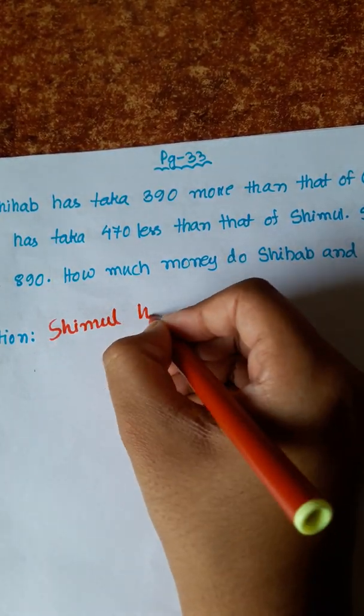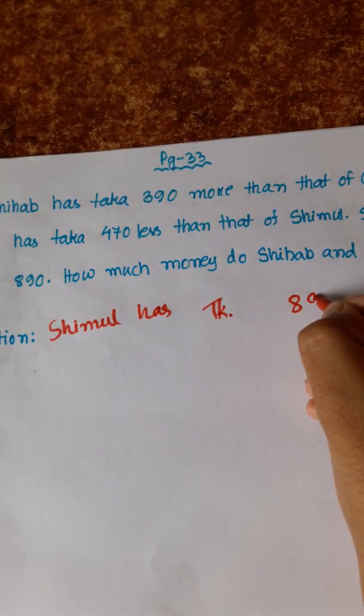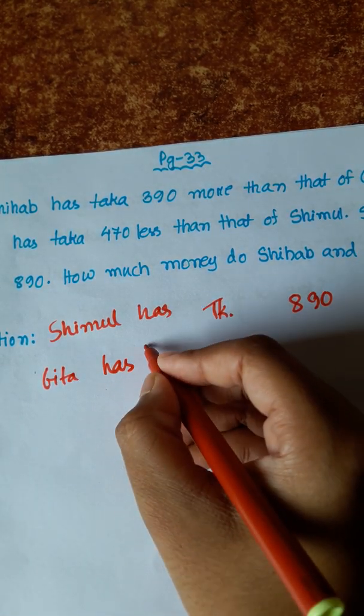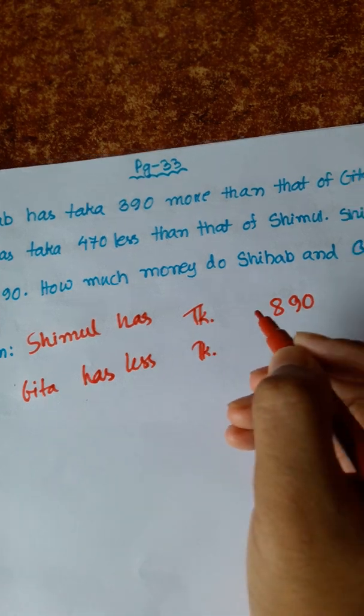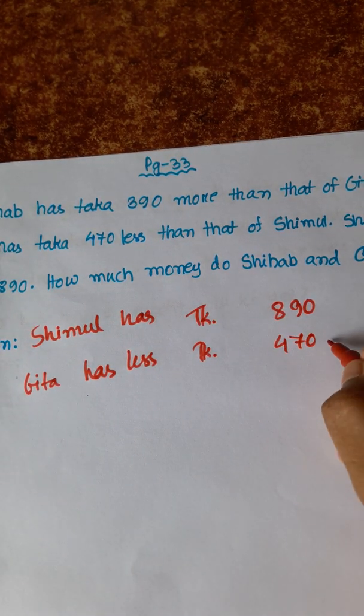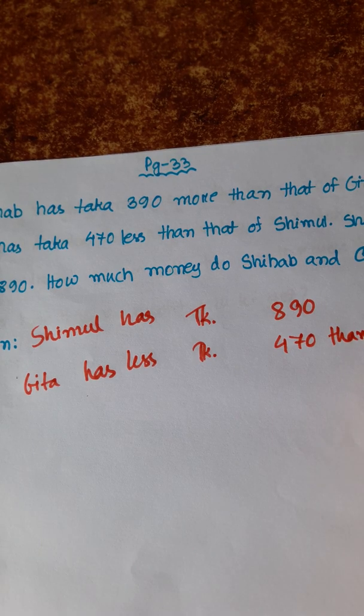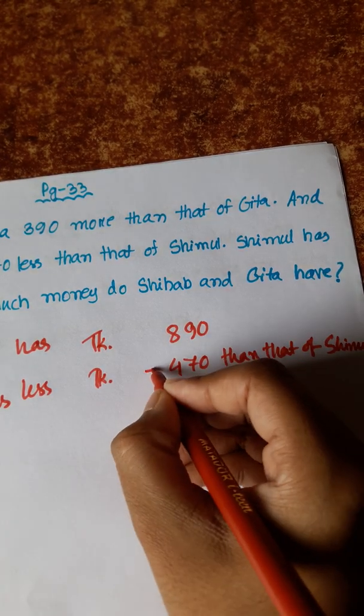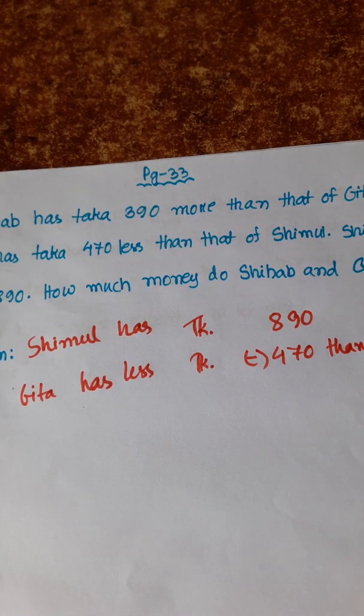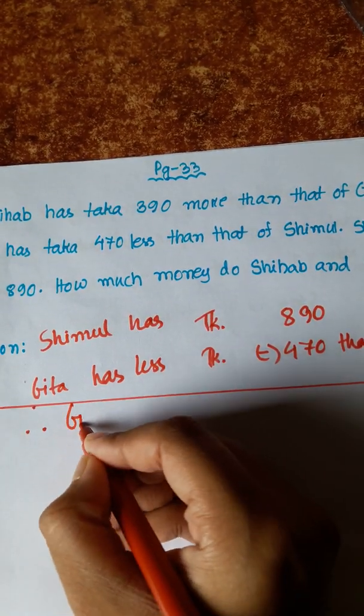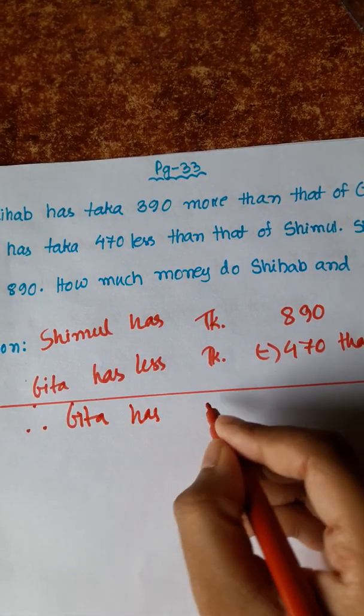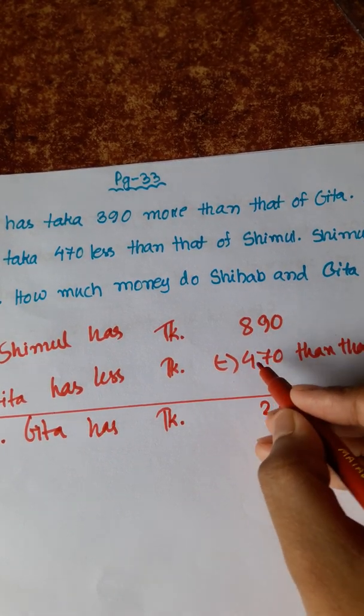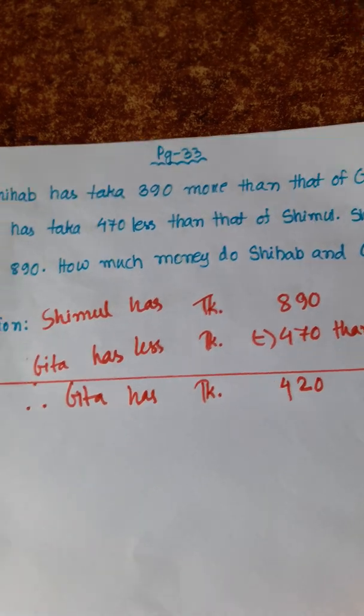Shimul has taka 890. Gita has less taka, 470 than that of Shimul. Therefore, Gita has taka: 0 minus 0 is 0, 9 minus 7 is 2, 8 minus 4 is 4. So Gita has taka 420.